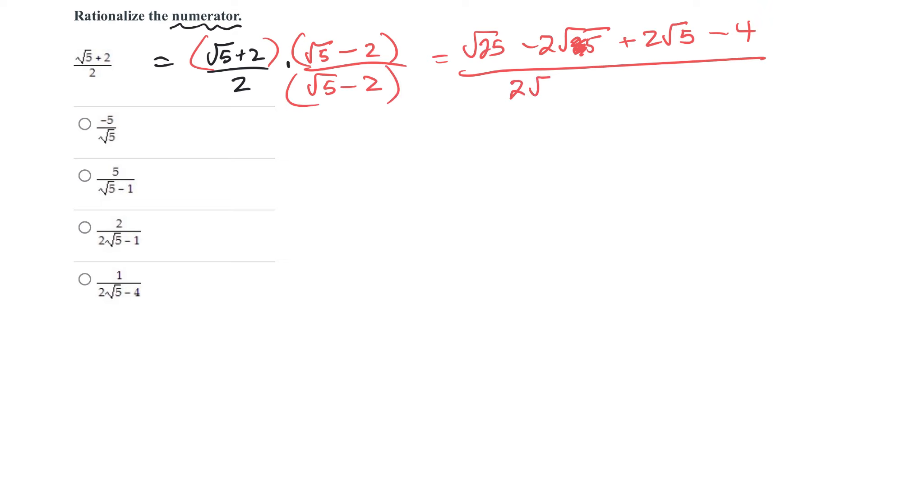All over, this would be 2 times root 5 minus 4. Okay, on the top, root 25 is 5. The minus 2 root 5 and plus 2 root 5 cancel, and then I have minus 4, all over 2 root 5 minus 4.